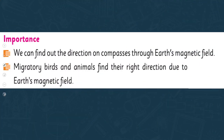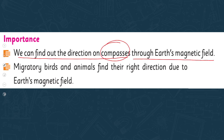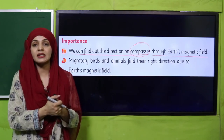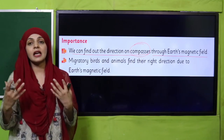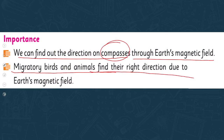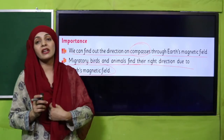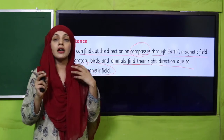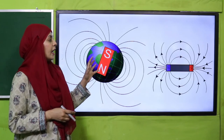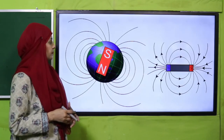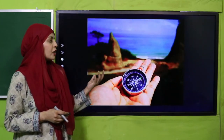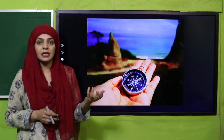What is the importance of Earth's magnetic field? We can find directions using compasses due to Earth's magnetic field. I will explain how compasses work in upcoming lectures, but this is a very important use of Earth's magnetism — we find directions using a compass. In addition, migratory birds and animals also find their right direction due to Earth's magnetic field. Seasonal birds that migrate from one place to another also navigate using the Earth's magnetic field. The Earth's magnetic field is very similar to the magnetic field of a bar magnet.